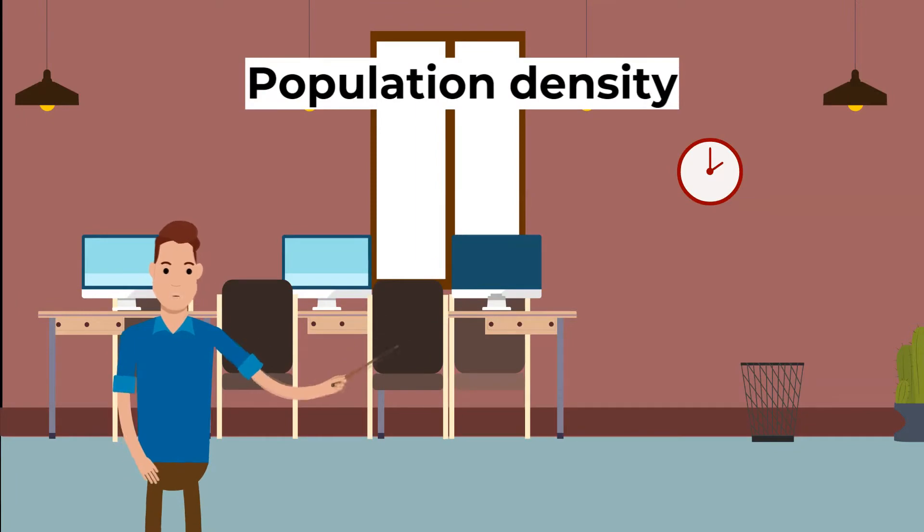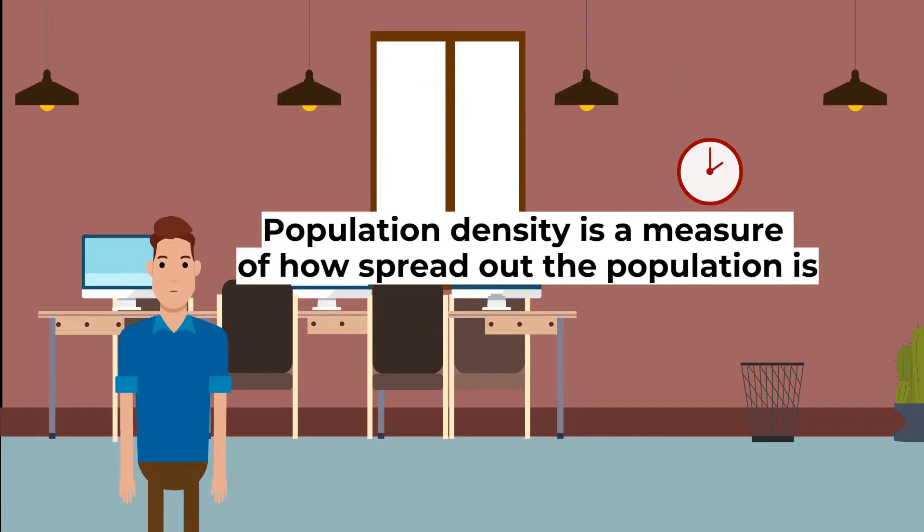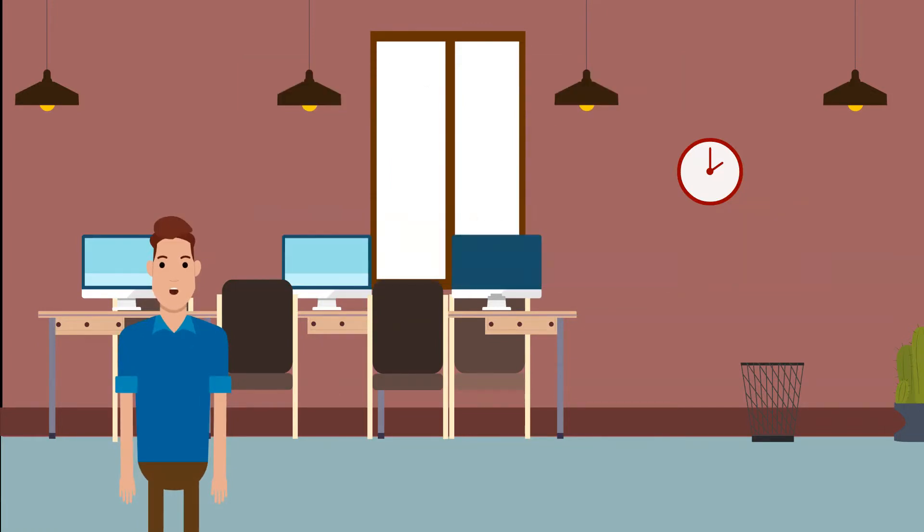First, let's recap population density. Population density is a measure of how spread out the population is. For example, for the same square area of land, how many people live in each region?